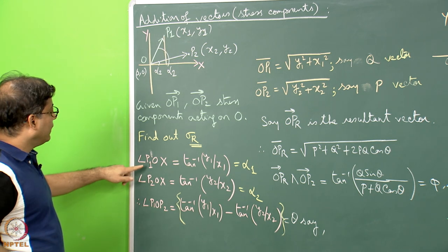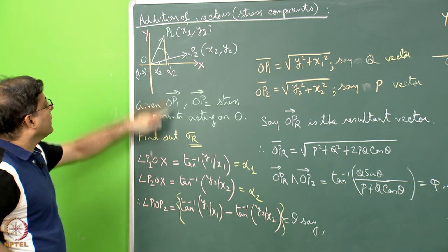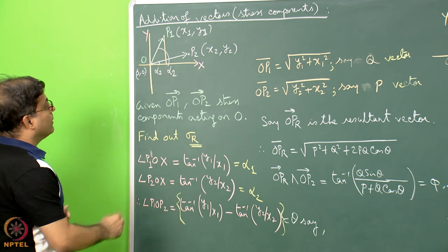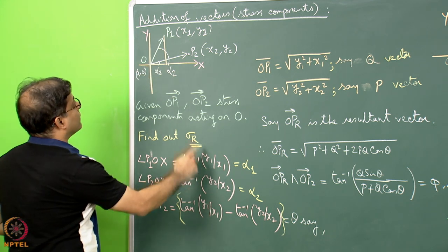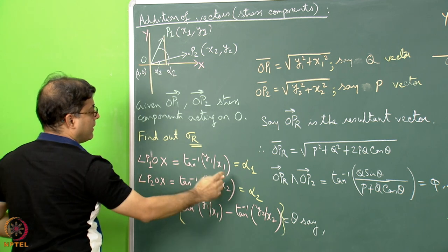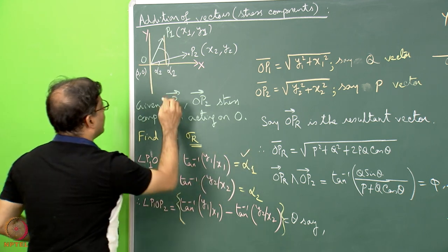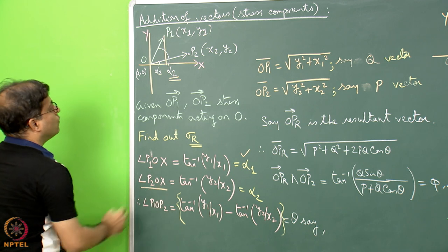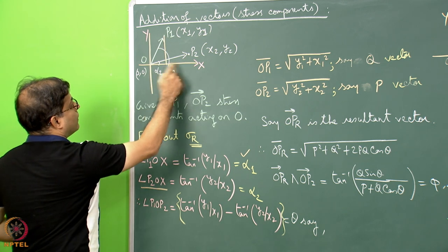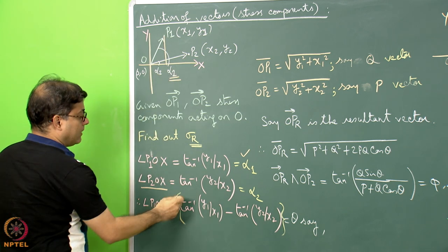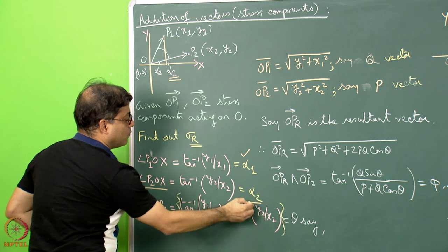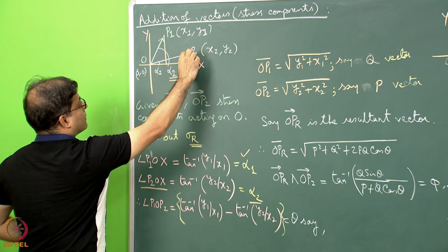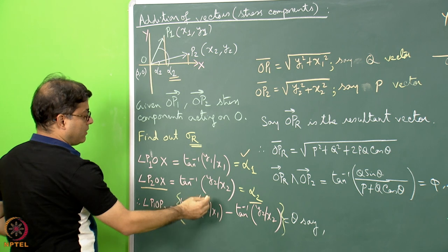The angle P1Ox, that is the angle alpha1, will be given by tan inverse of y1 divided by x1. The angle P2Ox — let that angle be alpha2 — can be written as tan inverse of y2 divided by x2.